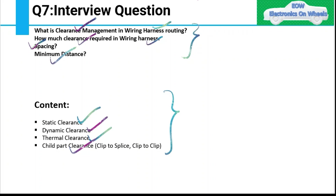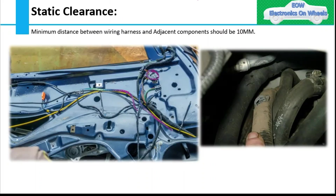Let's start with static clearance. As the name suggests, this clearance is between the wiring harness and adjacent components or surrounding parts that are stationary. For example, consider a bolt or nut — it is a stationary part. When your wiring harness and surrounding components have no movement or minimal movement, this is where static clearance applies.